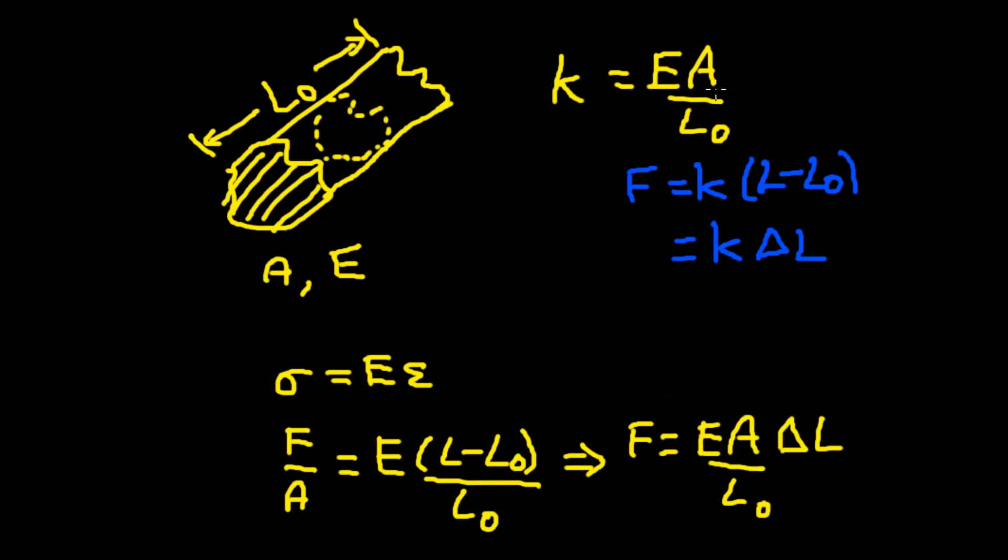And if you take the same material of the same length and then double the area, the spring constant will double. So if you want to adjust the spring constant of a bar of material, you can use a stiffer material or you can just use a material with a larger cross-sectional area.